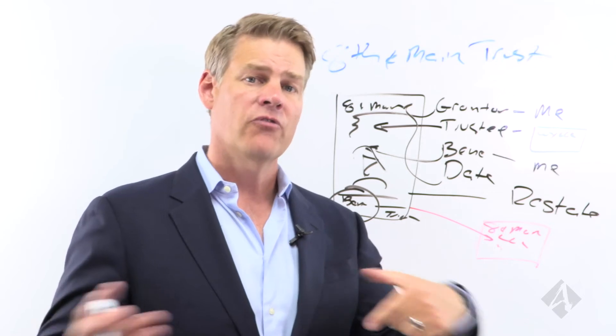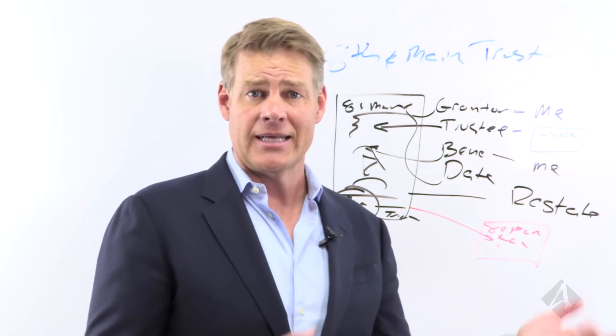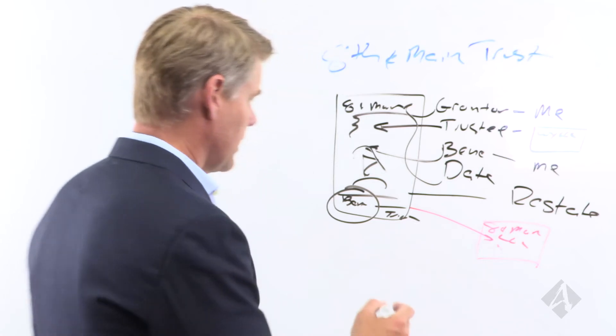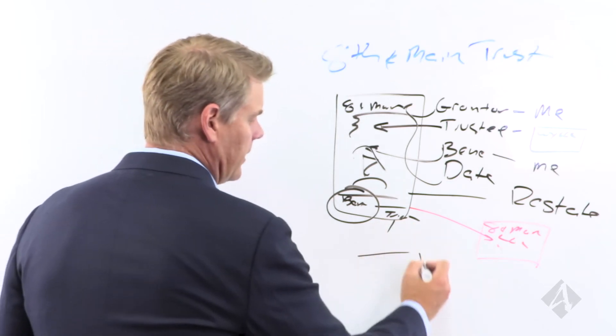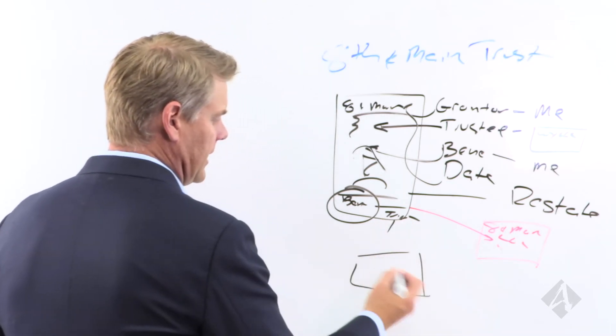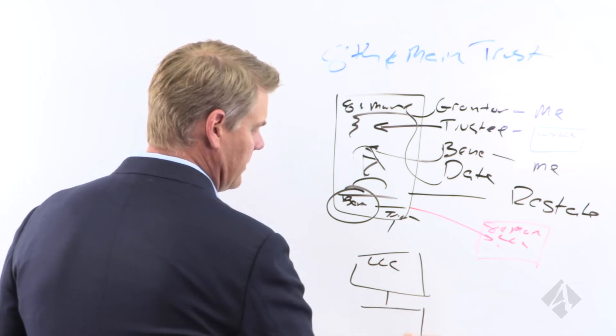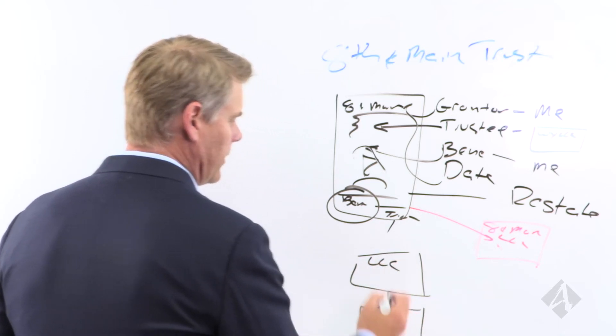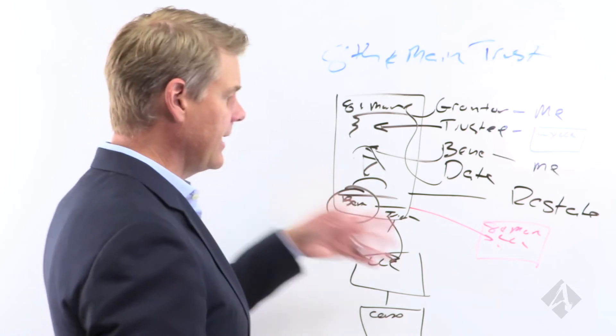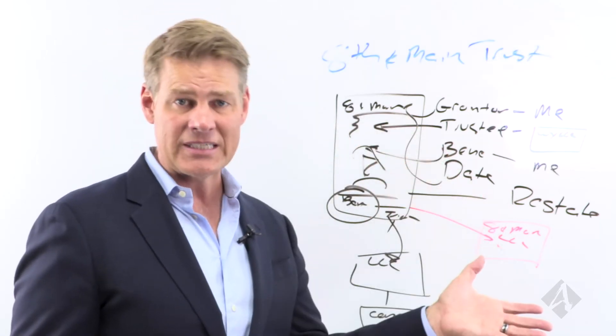Now, if you want to flip the property, well, we're not flipping in that LLC. That's the buy and hold structure. If I'm flipping, then I'm going to move it over here to a separate LLC, my flip LLC, that should be owned by my corp right over here. So it's going to go here. And again, I'll do the exact same process, restate the trust.